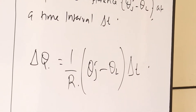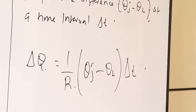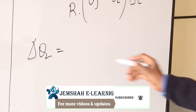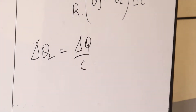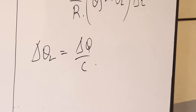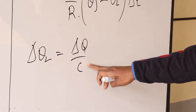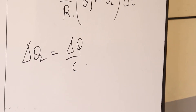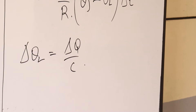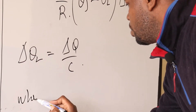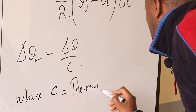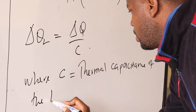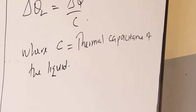From the heat balances equation, we know that change in theta L equals change in Q all over C, where C is the thermal capacitance of the liquid. The change in Q divided by the capacitance gives us the change in the liquid temperature.